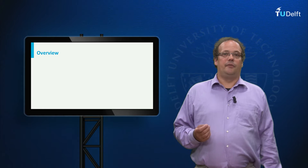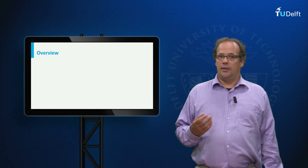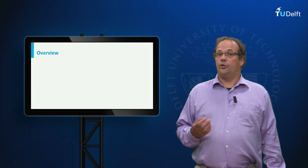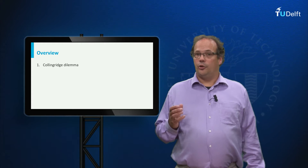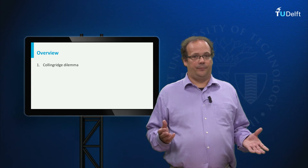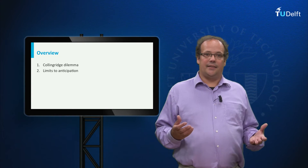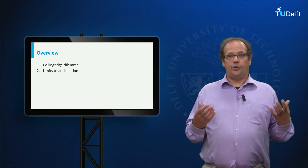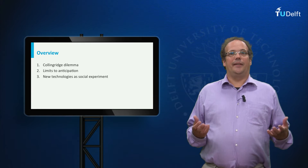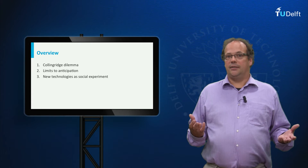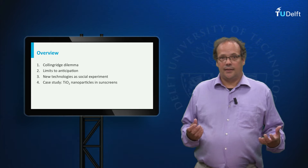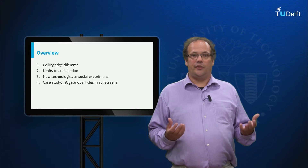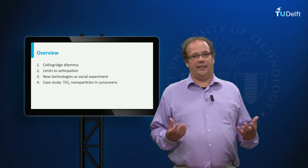In this lecture we will look at how we can deal with an uncertain future in responsible innovation. We will do so by first looking at the so-called Collingridge's dilemma, then sketch the limits to anticipating the future, and as an alternative I will sketch an experimental approach — new technologies and social experiments. Finally, I will discuss titanium dioxide nanoparticles in sunscreens as an illustration.